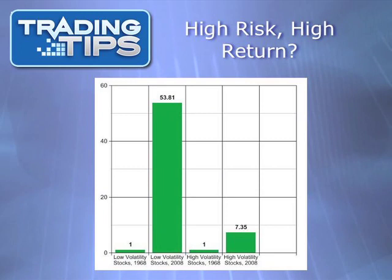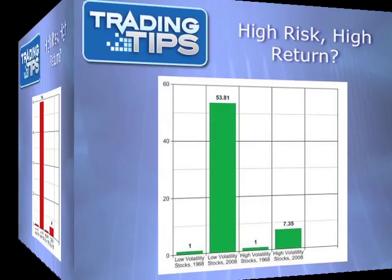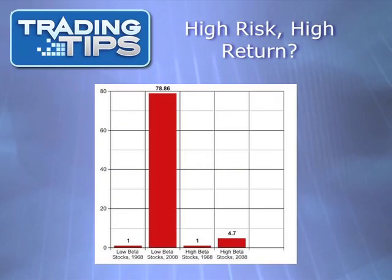The stocks in the group with the lowest volatility saw a one-dollar investment turned into $53.81, while the group with the highest volatility saw one dollar turn into just $7.35.